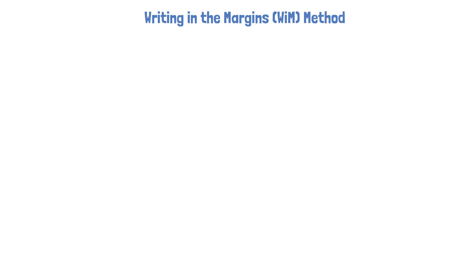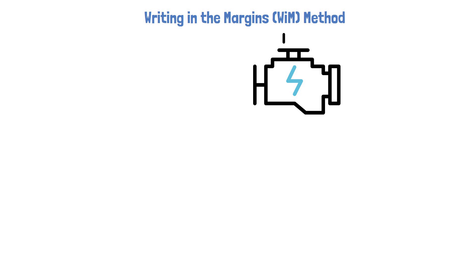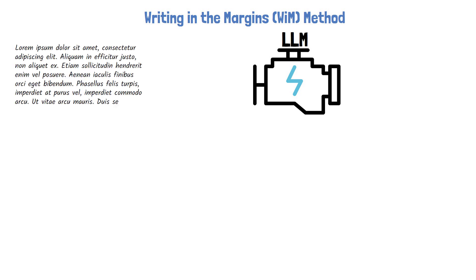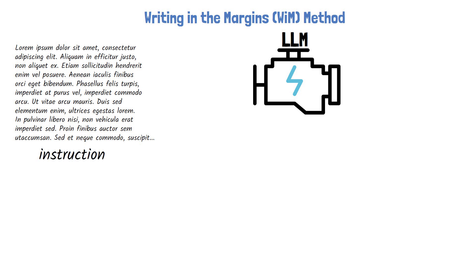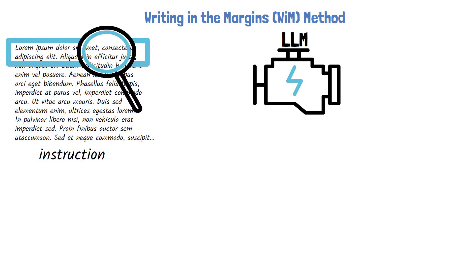The method introduced in the paper is called Writing in the Margins. We will start with a simple high-level illustration and gradually add more details. To illustrate how it works, we have a large language model, a very long text as context, and an instruction we want the model to address. Instead of processing the entire input sequence at once, the Writing in the Margins method breaks the context into chunks and feeds the context into the LLM by chunks.